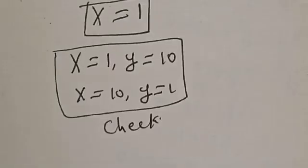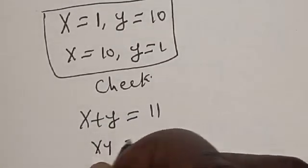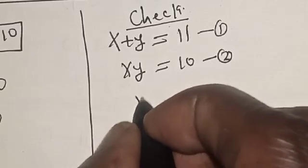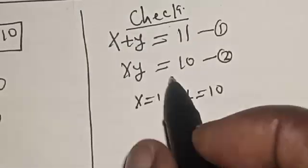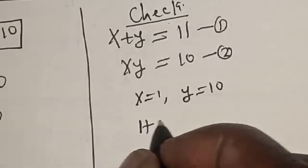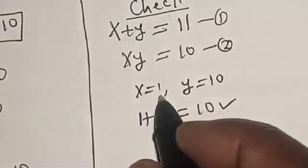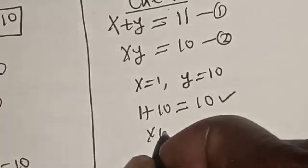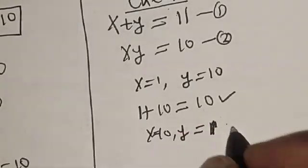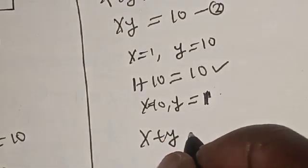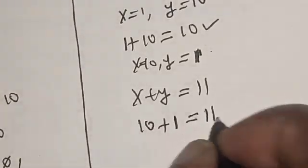Let's check. We have the given equations: x plus y is equal to 11, and xy is equal to 10. When x is equal to 1 and y is equal to 10, let's see if equation 1 equals 11. We have 1 plus 10, this is equal to 11 — we satisfy the given equation. Also, when x is equal to 10 and y is equal to 1, x plus y is 10 plus 1, which is also equal to 11.